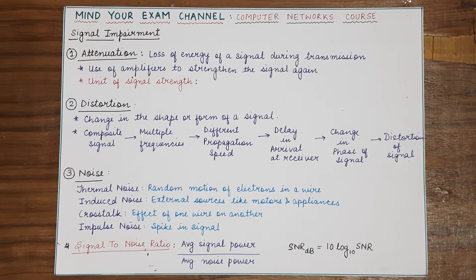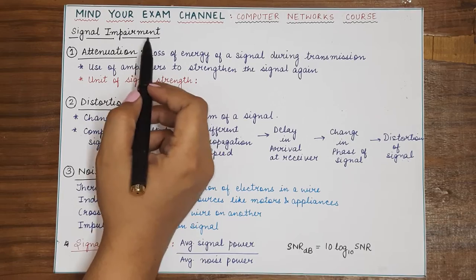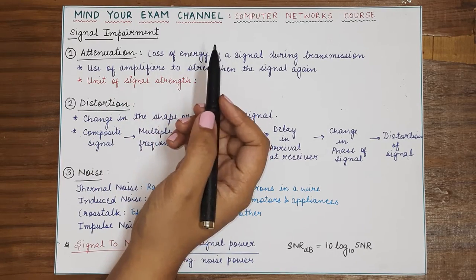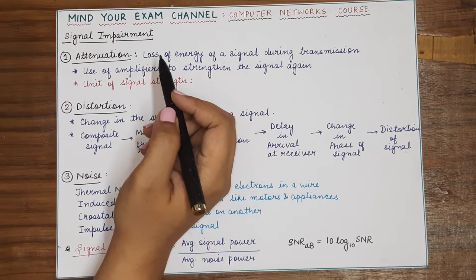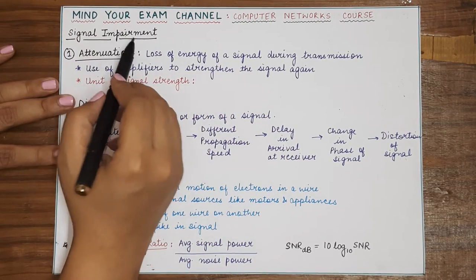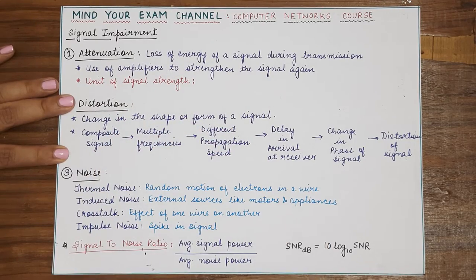Hello students, in this video we will be studying about signal impairment. Basically, we will be studying the different factors that affect the transmission of a signal, its strength, its amplitude, and what are the factors that cause different kinds of disturbances in the original signal when it is transmitted through a transmission media.